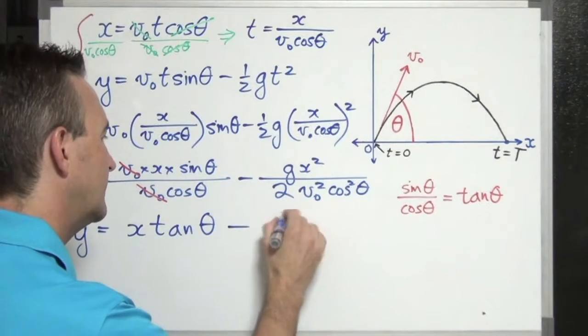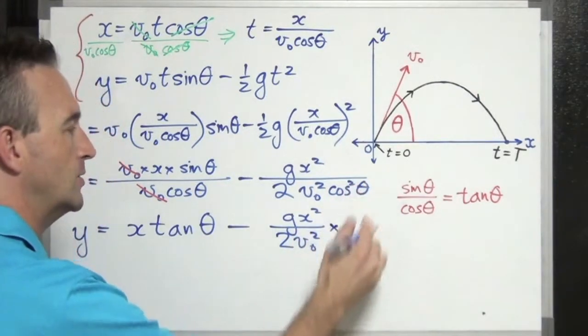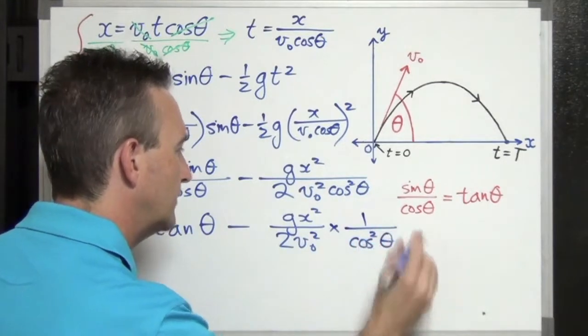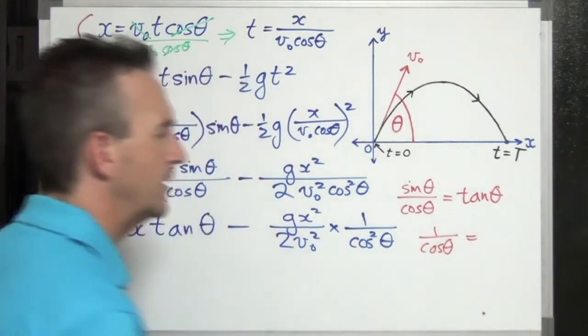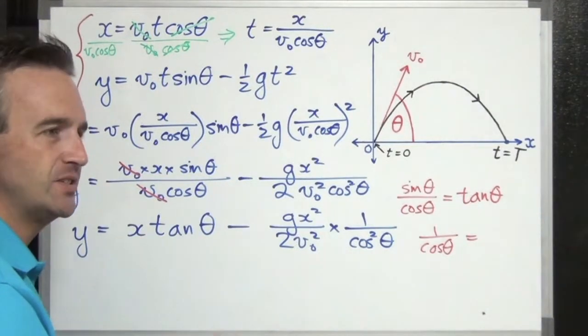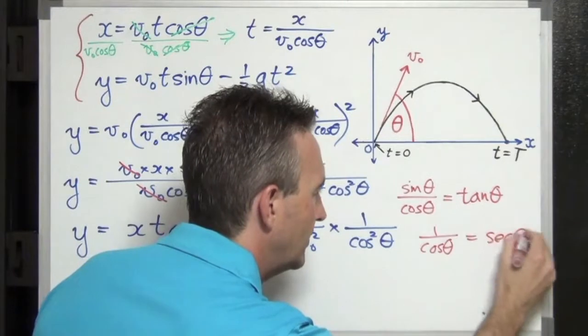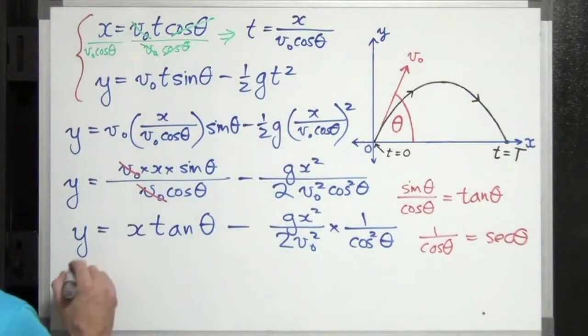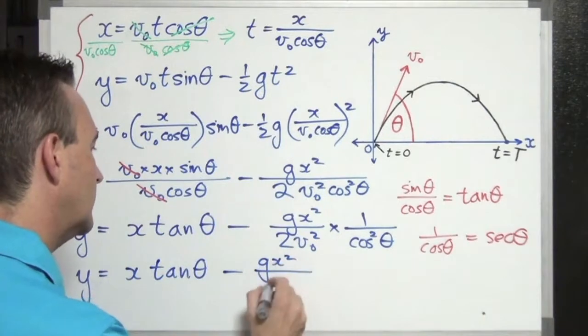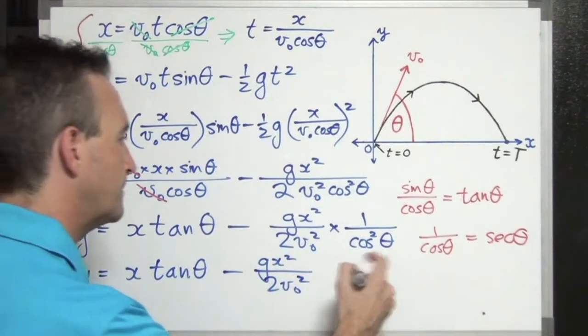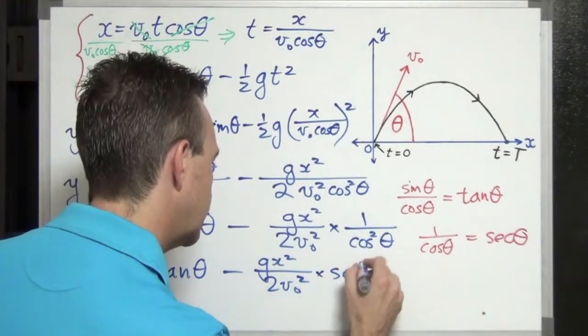And I might just copy this down here: g x squared over 2v naught squared. And I might just split off that cos squared theta into 1 over cos squared theta. So one more thing here. 1 over cosine theta. There's another expression for that too. These are called the reciprocal ratios. 1 over sine theta equals cosec theta. 1 over tan is cot theta. And 1 over cos is sec theta. A simpler way of writing it. Which means we can write this as y equals x tan theta minus g x squared over 2v naught squared times sec squared theta.